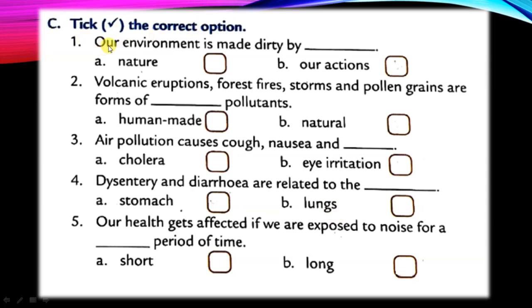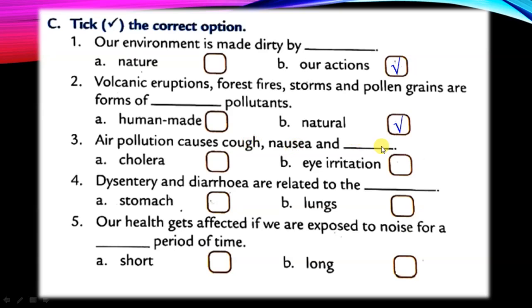Part C: tick the correct option. Our environment is made dirty by our actions - answer is B, our actions. Volcanic eruption, forest fire, storm and pollen grains are forms of natural pollution. Air pollution causes cough, nausea and eye irritation - answer is B.